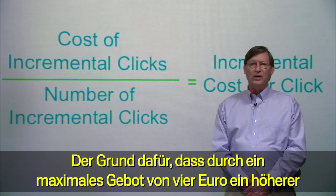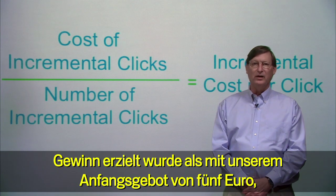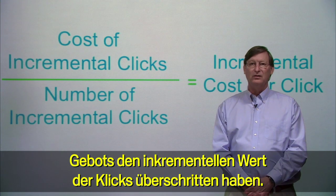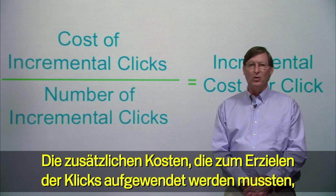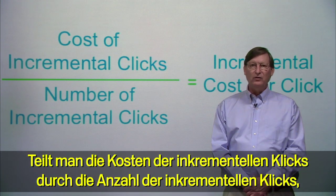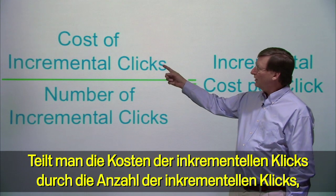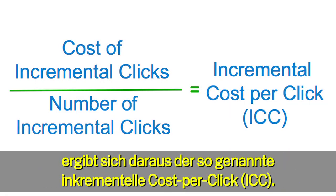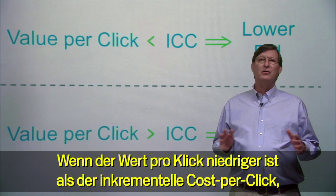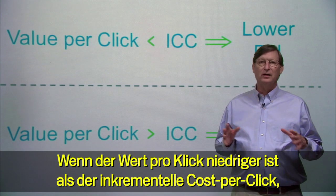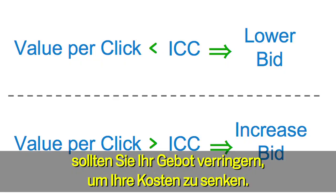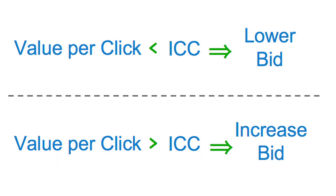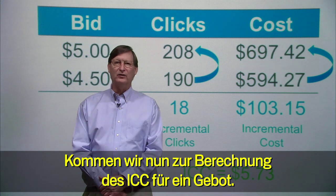The reason that a max bid of $4 generated more profit than our initial $5 bid was because the incremental cost of the clicks we got at the higher bid exceeded the incremental value of those clicks. That is, the additional cost of gaining those clicks was more than the revenue we generated from them. That ratio — the cost of incremental clicks divided by the number of incremental clicks — is called the incremental cost per click, or ICC. Whenever your value per click is less than the incremental cost per click, it will pay you to lower your bid. Conversely, if your value per click is higher than your incremental cost per click, you should increase your bid.